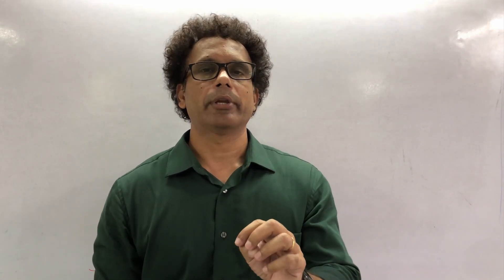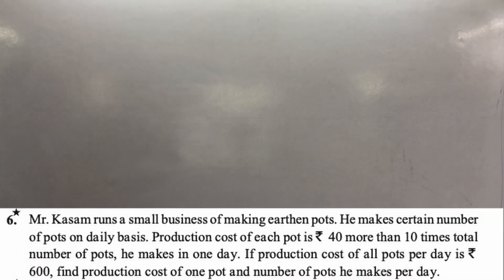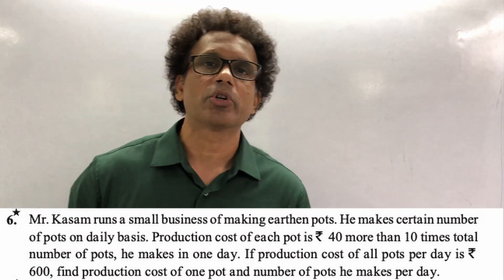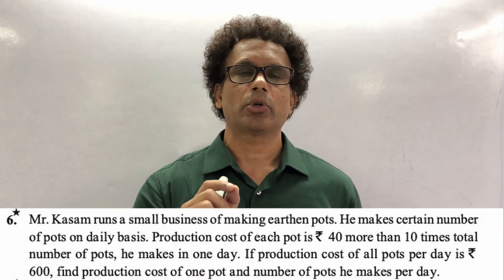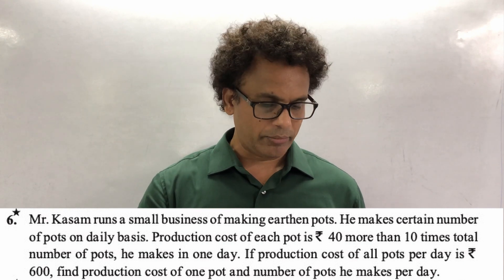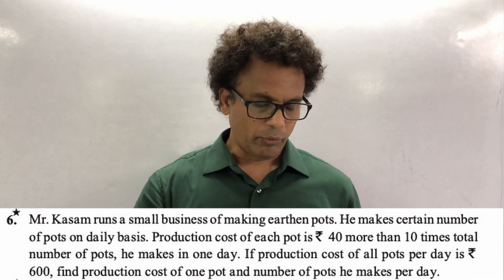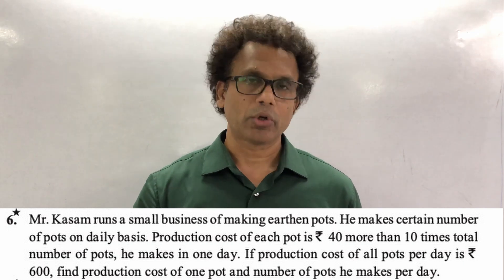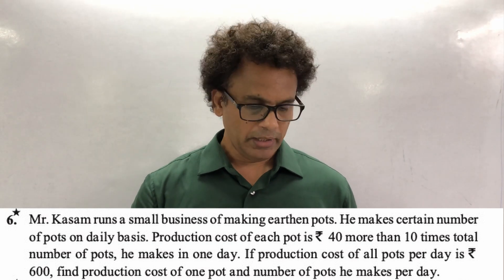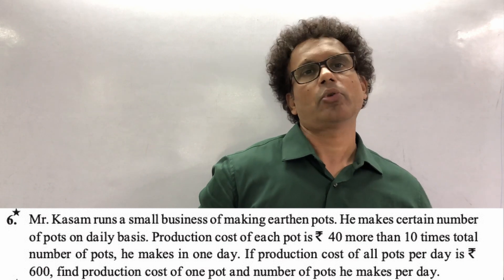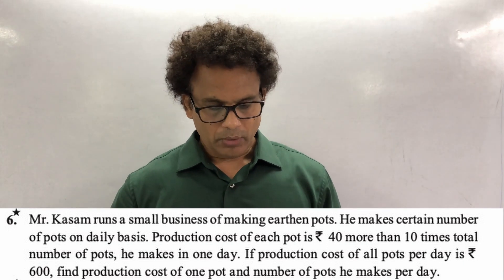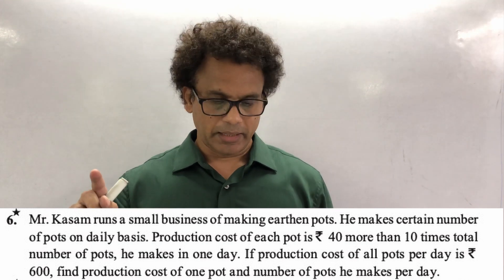Getting equations from word problems is very important. Check the first example on screen. Mr. Kasam runs a small business making earthen pots. He makes a certain number of pots on a daily basis. The production cost of each pot is rupees 40 more than 10 times the total number of pots. If the total production cost of all pots per day is 600 rupees, find the production cost of one pot and the number of pots he makes.